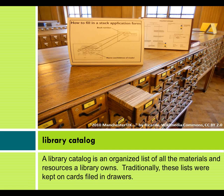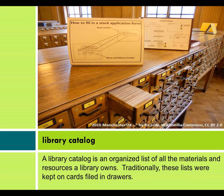Library Catalog. A library catalog is an organized list of all the materials and resources a library owns. Traditionally, these lists were kept on cards filed in drawers.